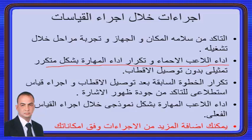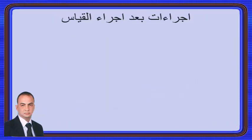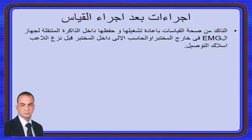ننتقل إلى إجراءات بعد القياس: التأكد من صحة القياسات بعد التشغيل. لا نقول للاعب فوراً أن يخلع الأقطاب، بل نبقيه كما هو ونشغل البيانات ونتأكد تماماً أن إشارات كل العضلات المتوصلة سليمة. نستعرضها مرة واثنتين وثلاثاً من أولها لآخرها. وبعد التأكد الكامل من حفظها نبدأ نزع أسلاك التوصيل من اللاعب.